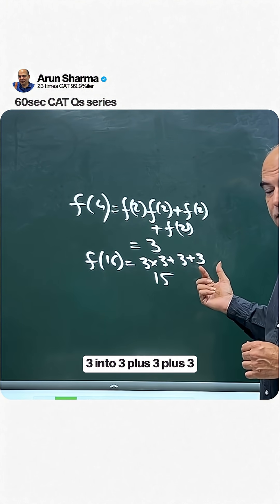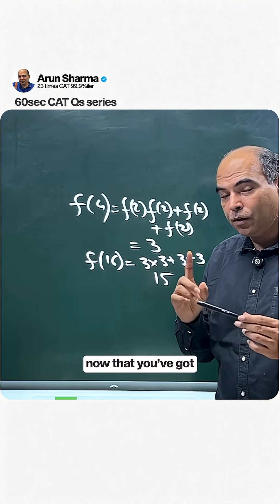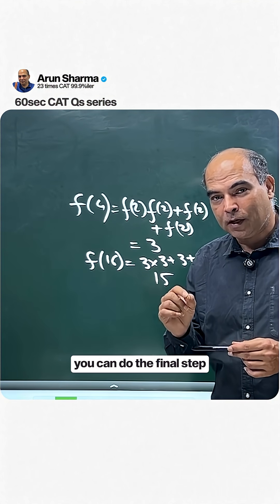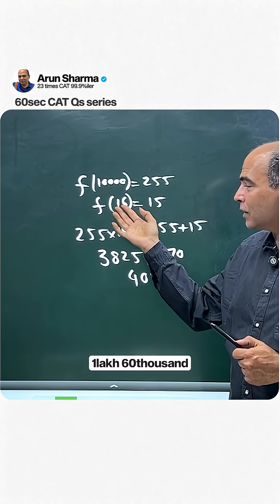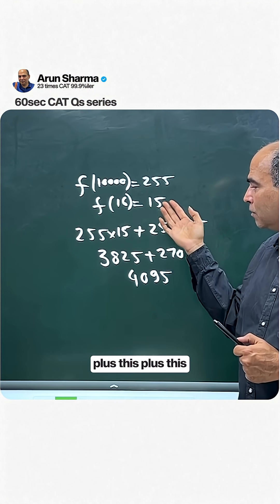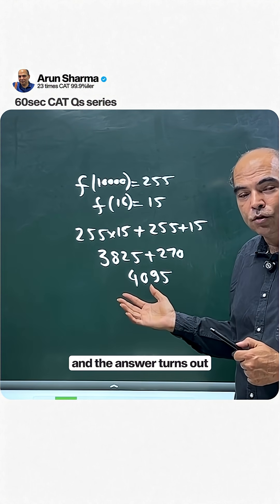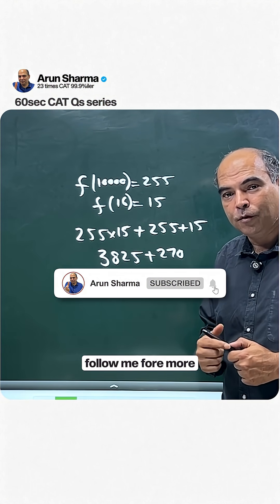Now that you have f(16) and f(10000), perform the final step: f(160000) = f(16) × f(10000) + f(16) + f(10000), which equals 4095. Follow me for more.